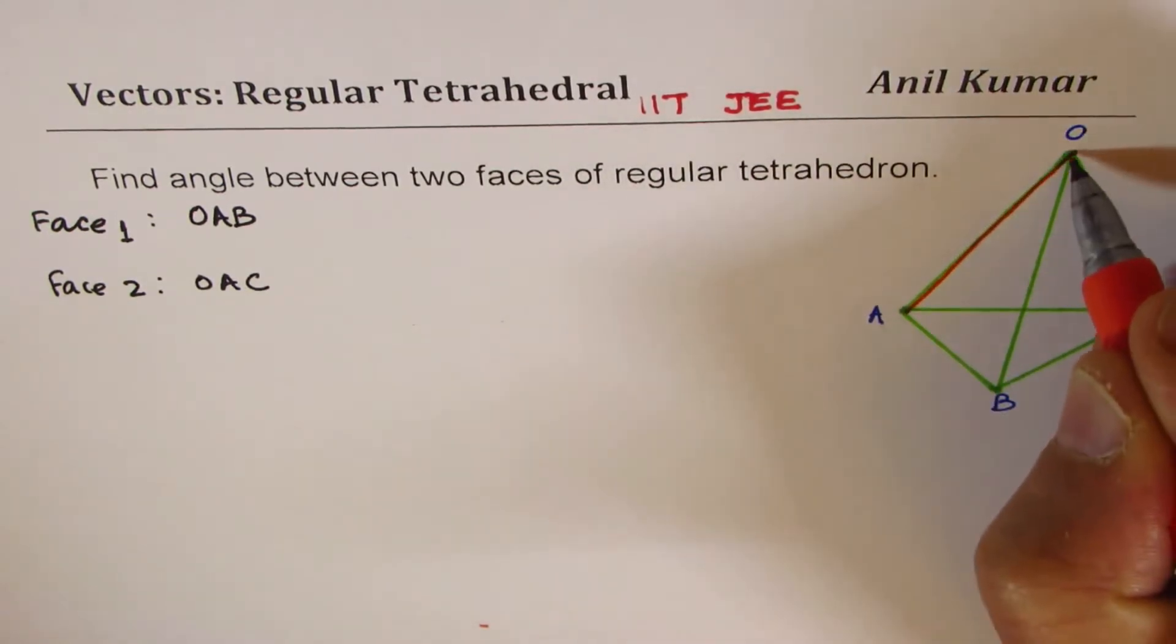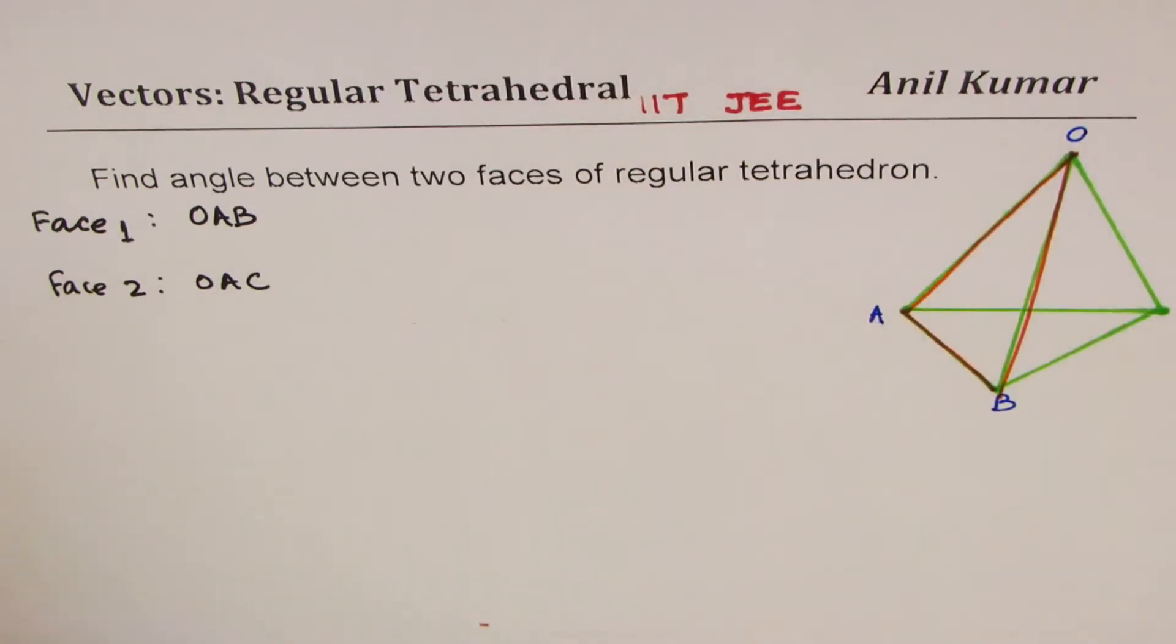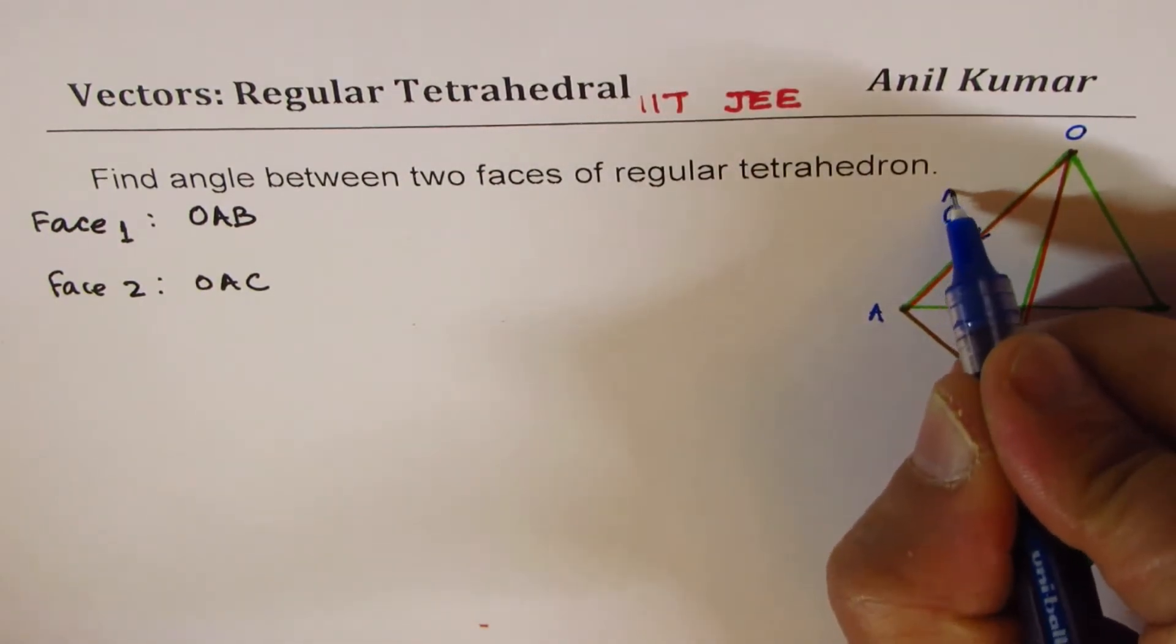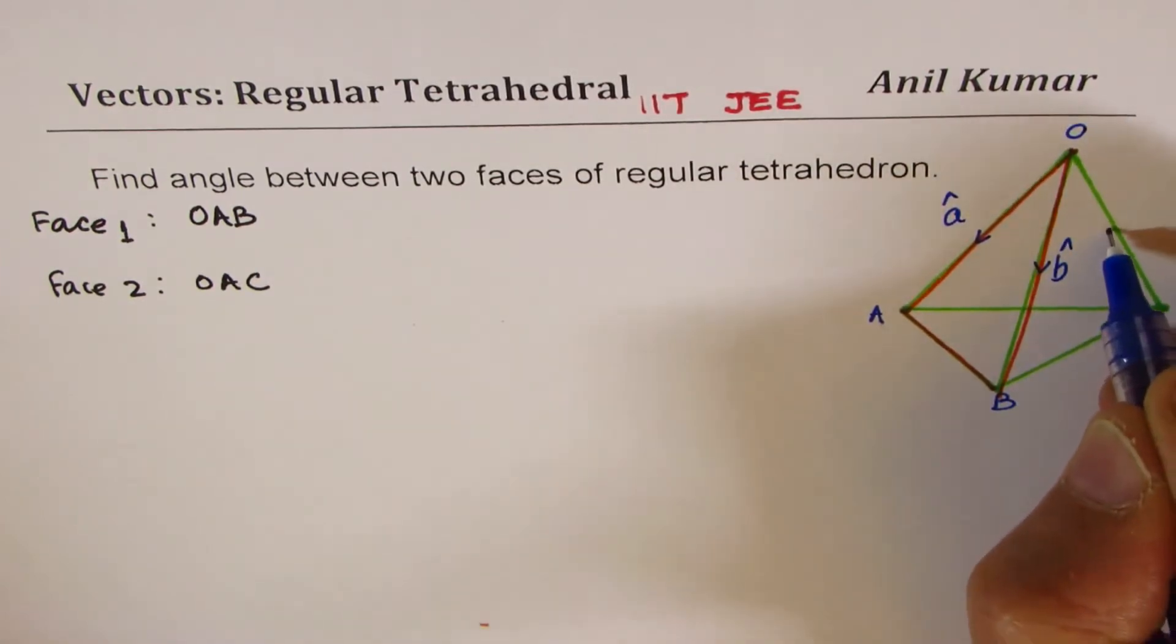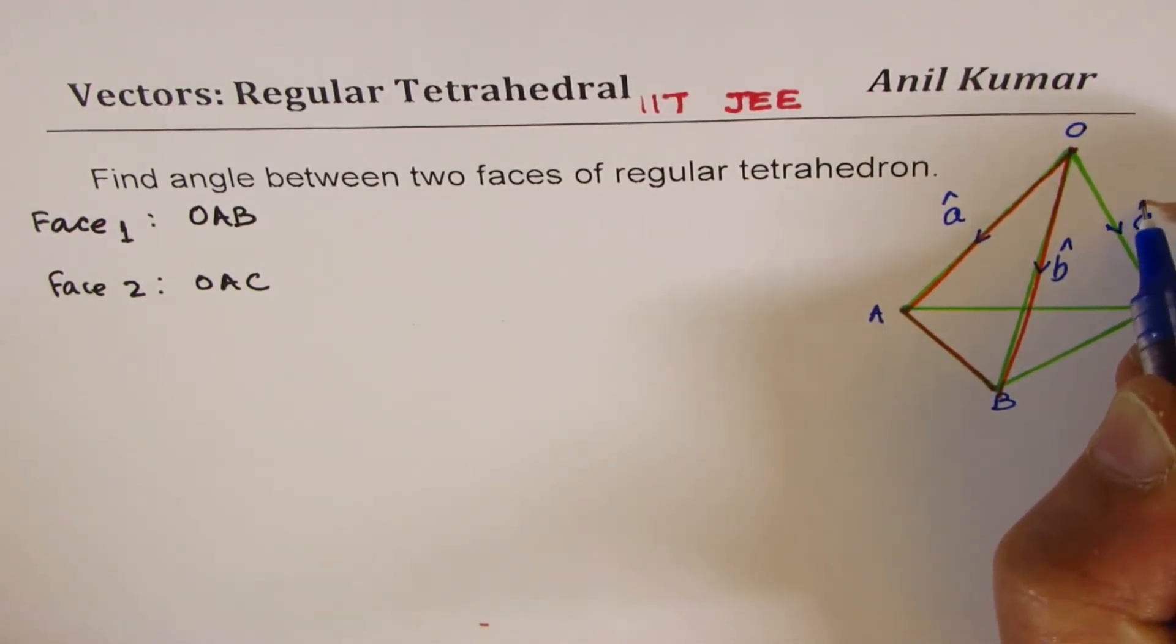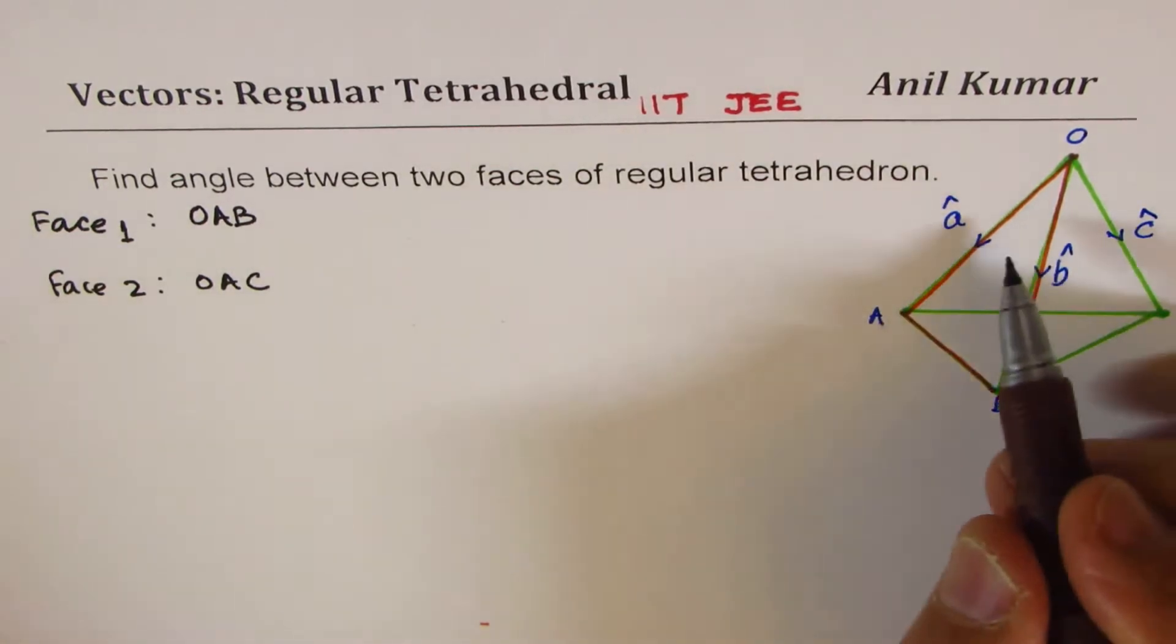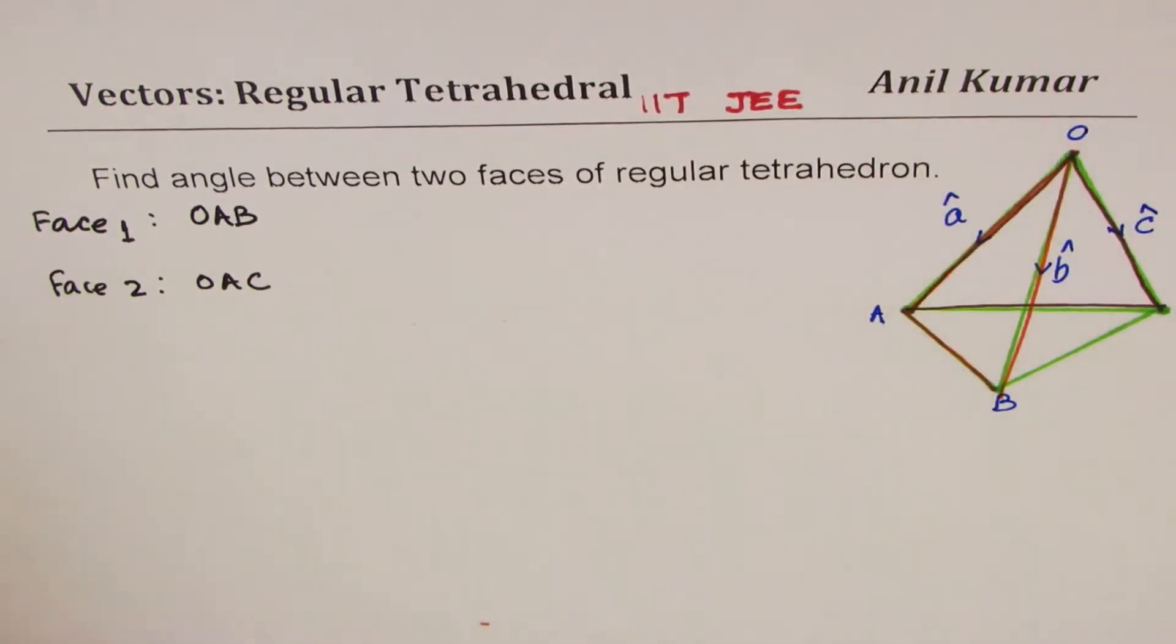We're talking about the face OAB. Now to define this face let me take unit vector A along OA, unit vector B along OB, and unit vector C along OC. So the other face for us is OAC. So these are the two faces which we are talking about.